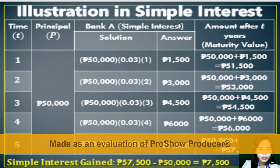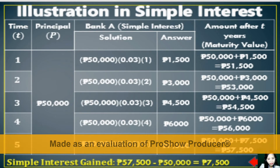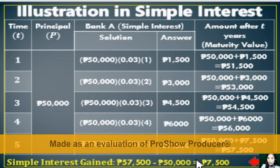In Year 5, multiplying the principal by the rate and time of 5 years, the simple interest gain is 7,500 pesos. Adding the capital of 50,000 pesos and the interest of 7,500 pesos gives a total maturity value of 57,500 pesos. So the total interest gain in Bank A is 7,500 pesos.